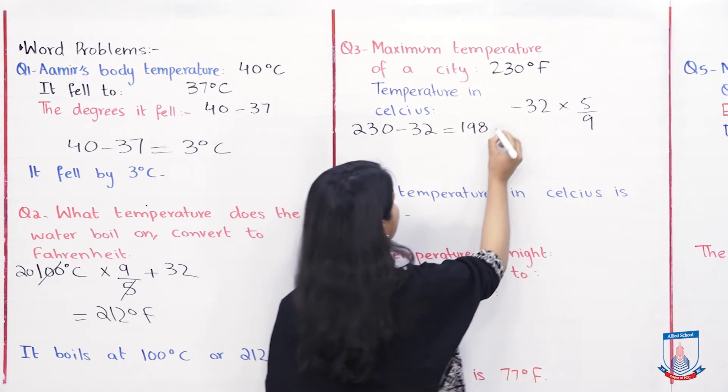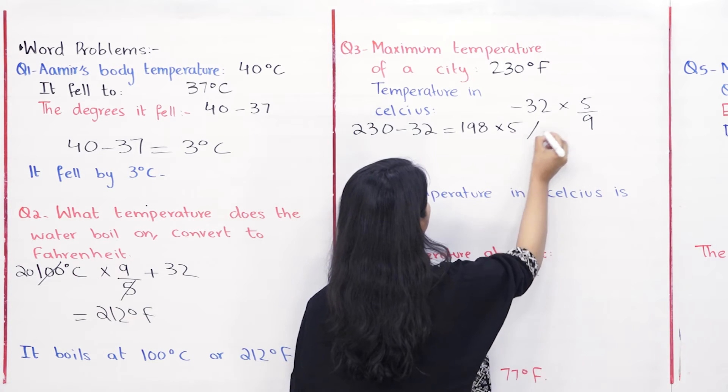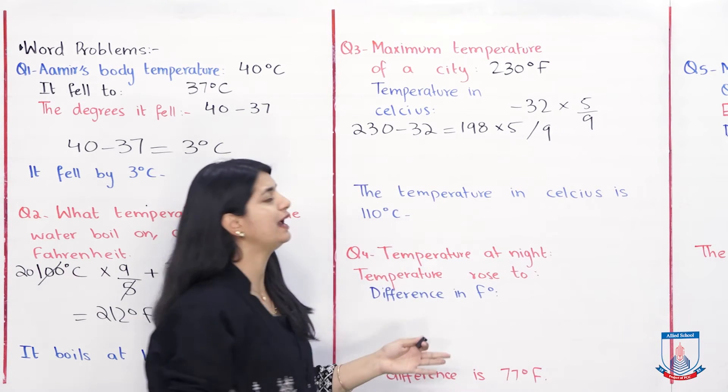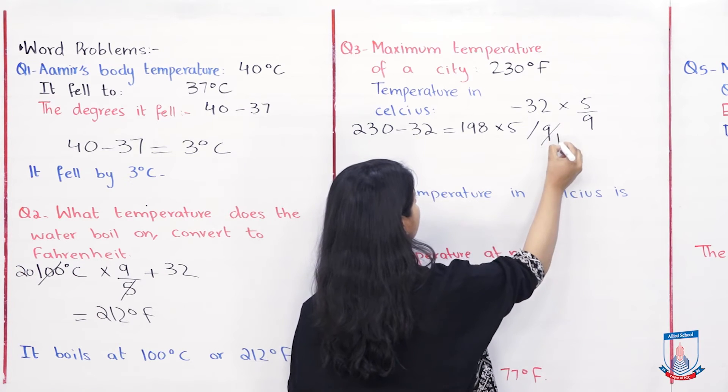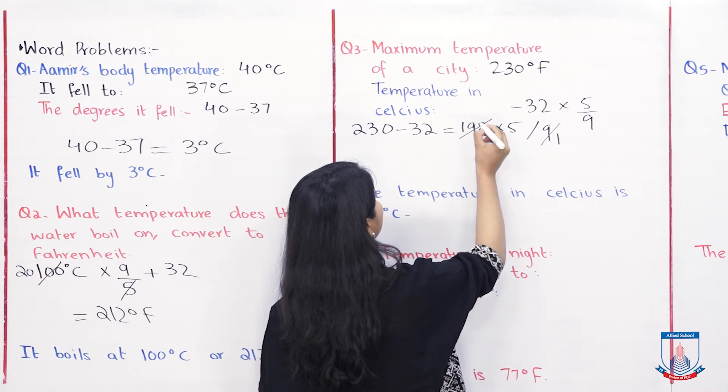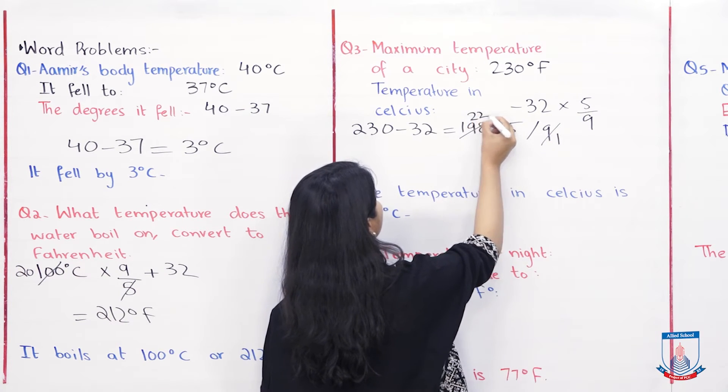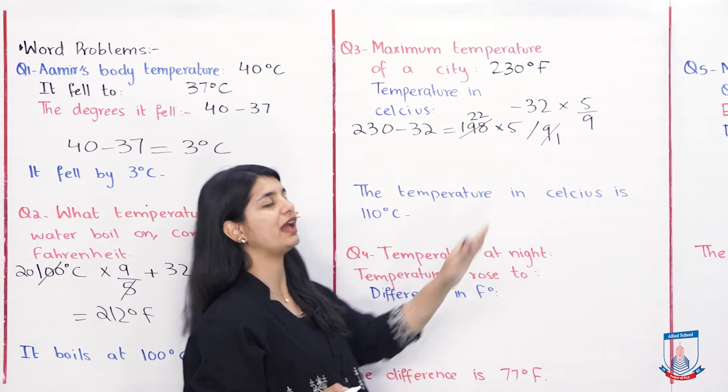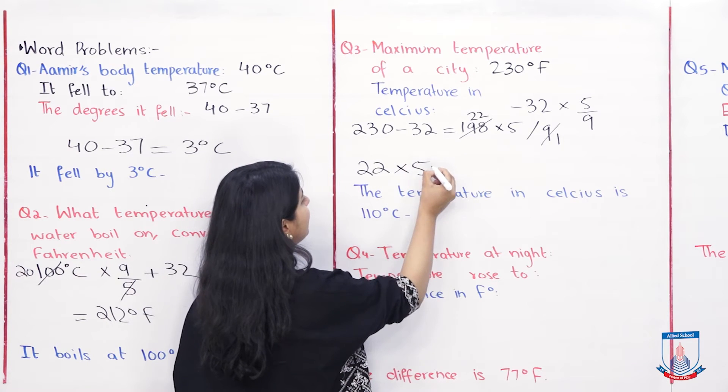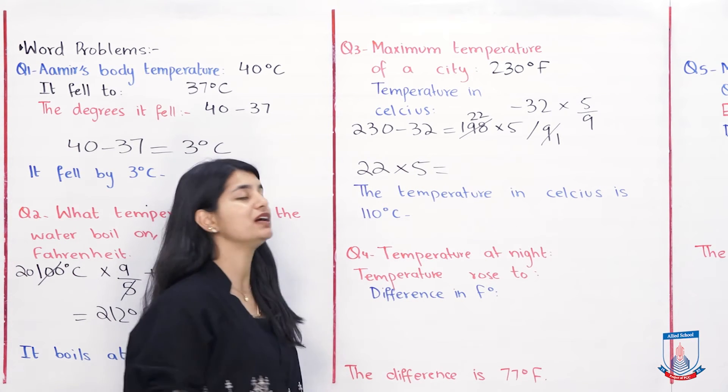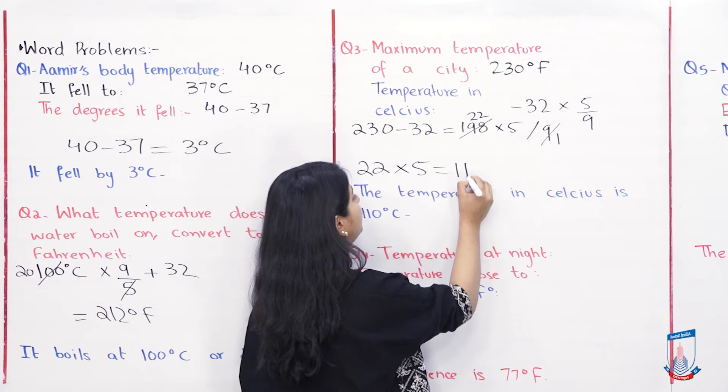Then we have to do this into 5 over 9. If we divide the 198 by 9, 9 divided by 9 is 1, 198 divided by 9 is 22. So you have 22 into 5. 22, so multiply by 5 and see what answer comes. Your answer is 110.